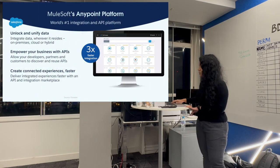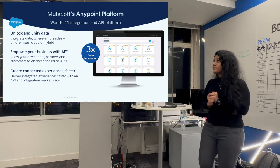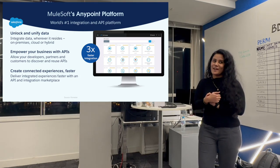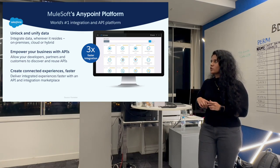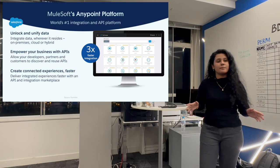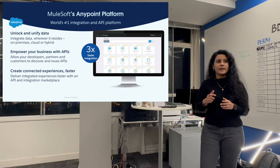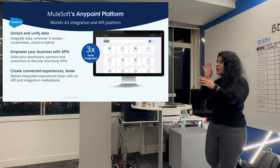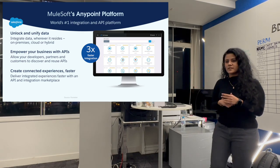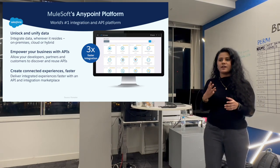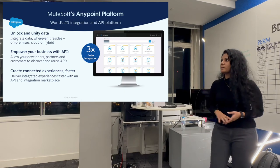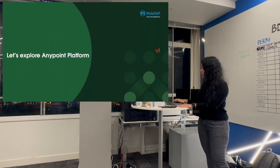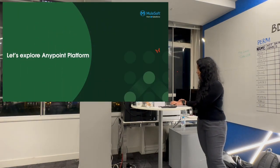Moving to AnyPoint Platform — the world's number one integration API platform. It has so much to offer for the entire API management lifecycle. You can design, publish, run, manage security, monitor, and debug everything at one place. Let's head over to AnyPoint Platform and see what we can do.